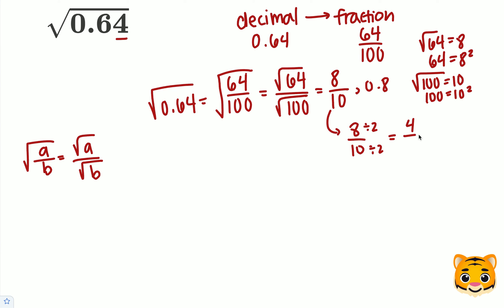8 divided by 2 is 4, while 10 divided by 2 is 5. So our answer to the square root of 0.64 is either 0.8 or 4 fifths.